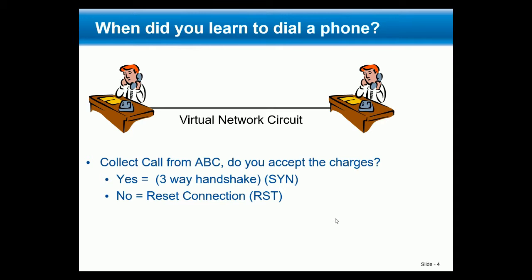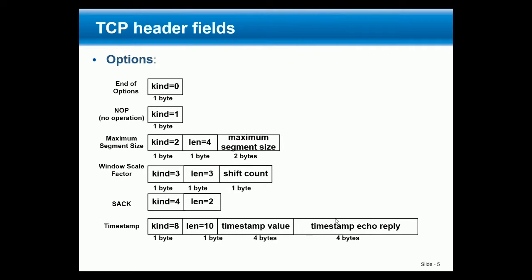You could also send a RST to reject my connection. I send a SYN request to port 80 and you're not running the web server, or the web server is down, so you can't accept the call — so you would then send me an ACK and a RST saying you can't accept. Again, there are different options that get negotiated inside of the three-way handshake.